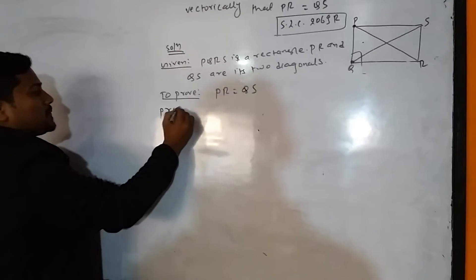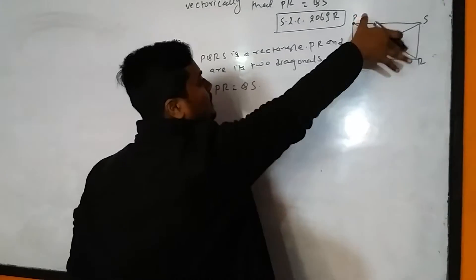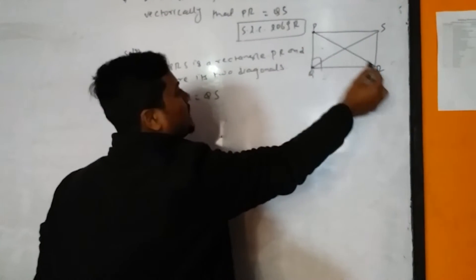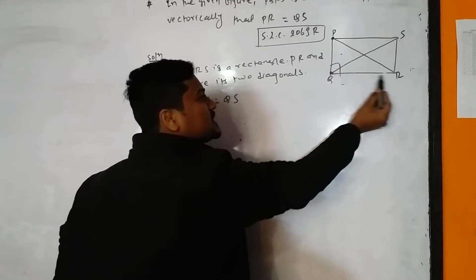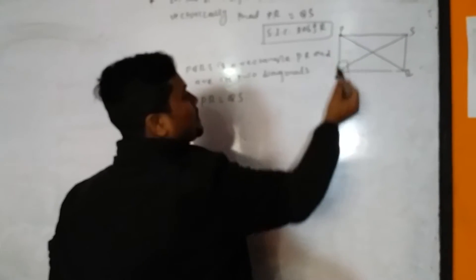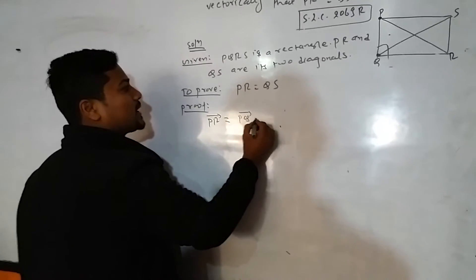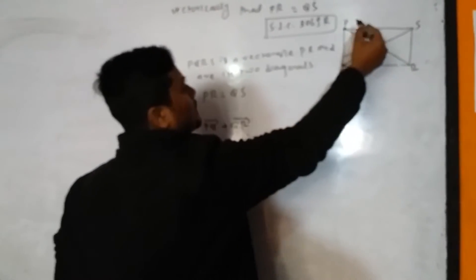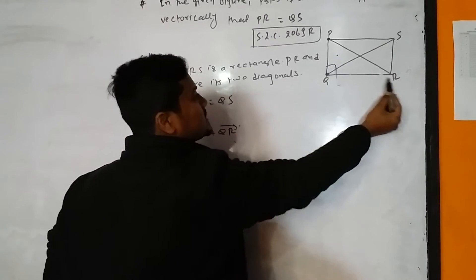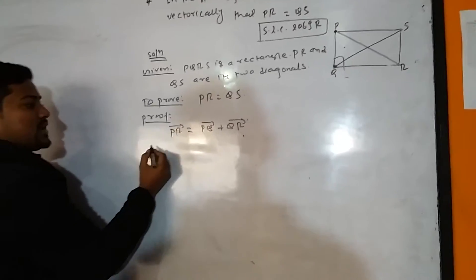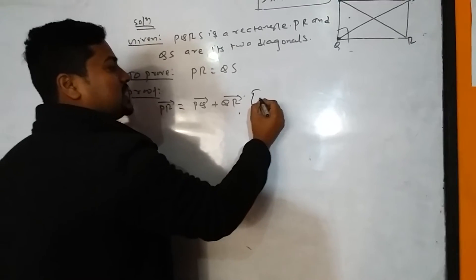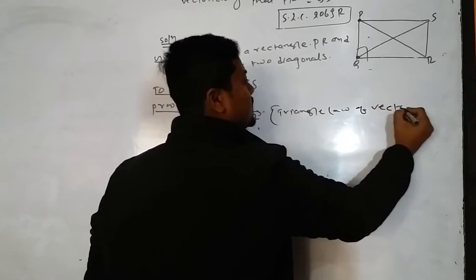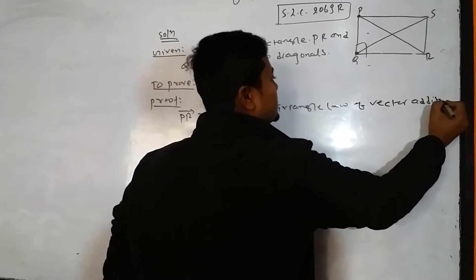Very easy. First of all, find PR vector. PR vector is equal to PQ vector plus QR vector. Here we used the Triangle Law of Vector Addition.